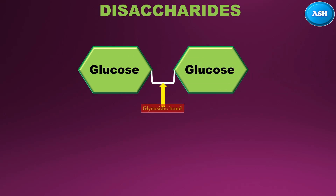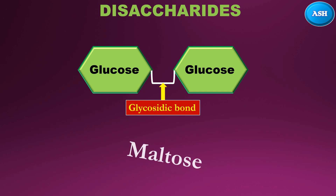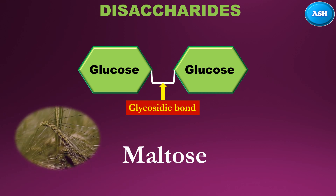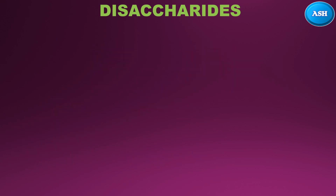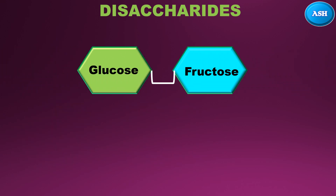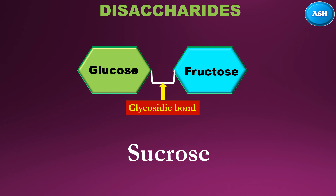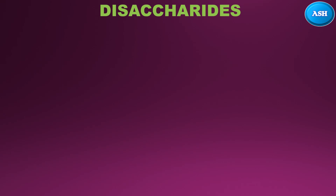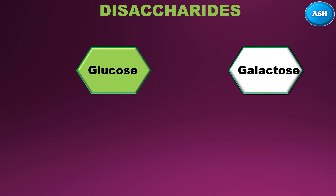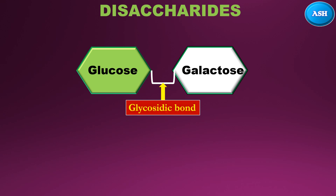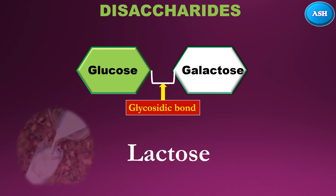Now the second type is disaccharides — di means two, saccharides means sugar. When two glucose units are linked together by a glycosidic bond, it forms maltose, which is found in malt sugar. When glucose and fructose are linked by a glycosidic bond, it forms sucrose, found in cane sugar. Glucose and galactose linked by a glycosidic bond form lactose, found in milk.